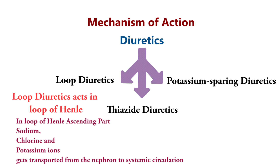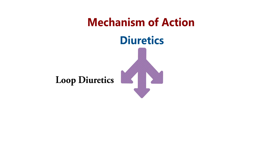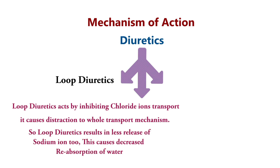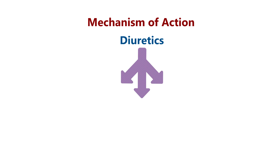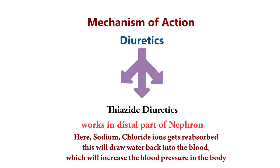Loop diuretics act on the ascending loop of Henle. Sodium, chloride, and potassium ions are normally transported here. Loop diuretics inhibit the chloride ion transport mechanism, resulting in decreased reabsorption of sodium and water, thus lowering blood pressure. Thiazide diuretics work in the distal part of the nephron, blocking sodium and chloride reabsorption.